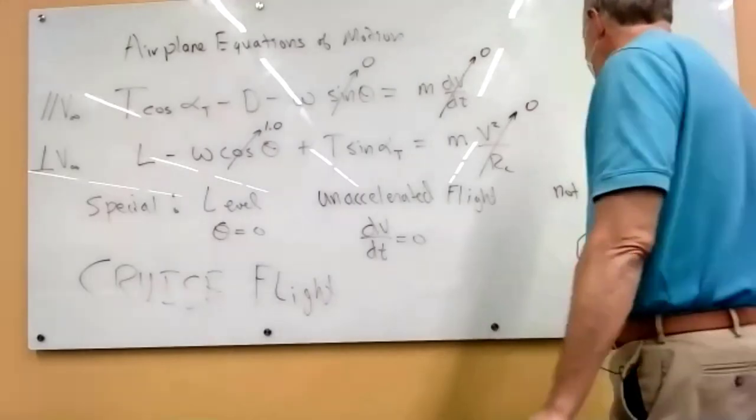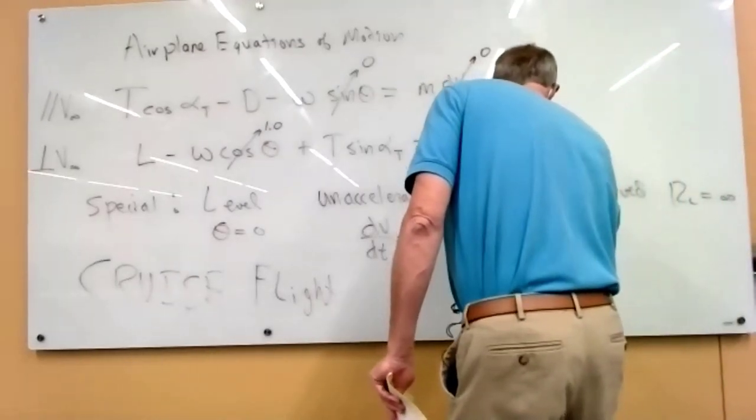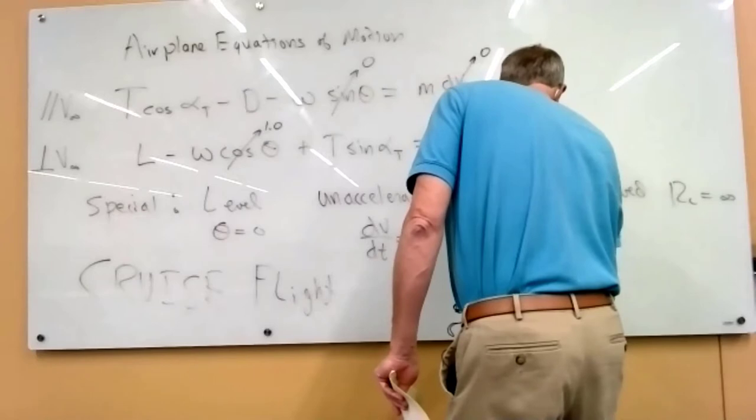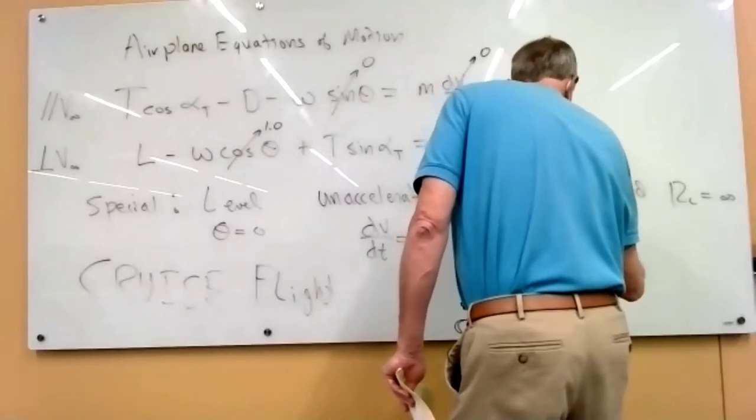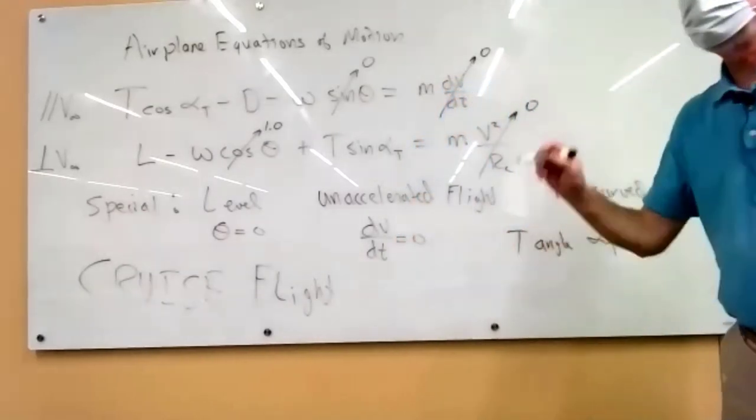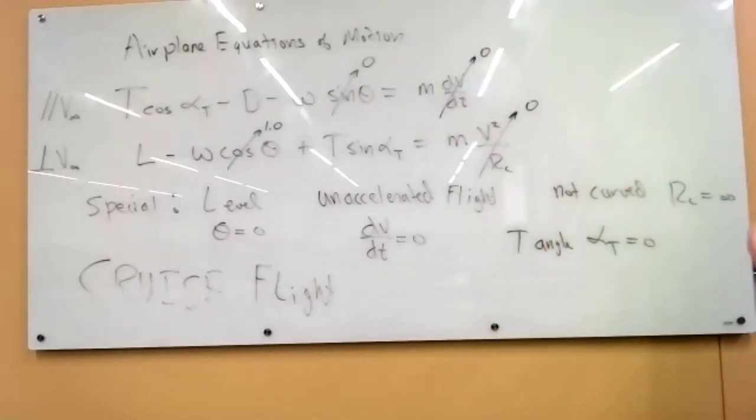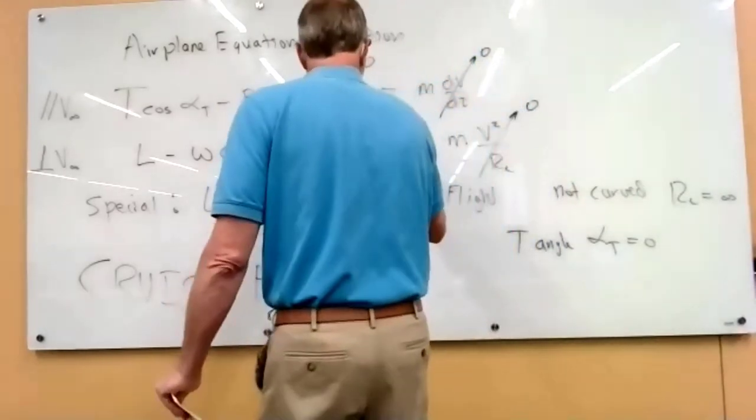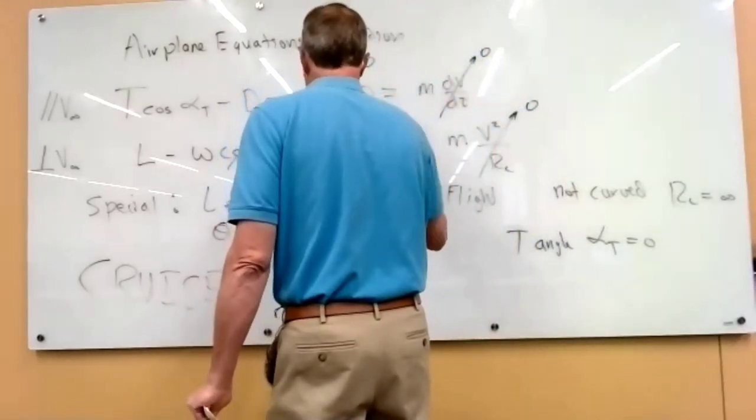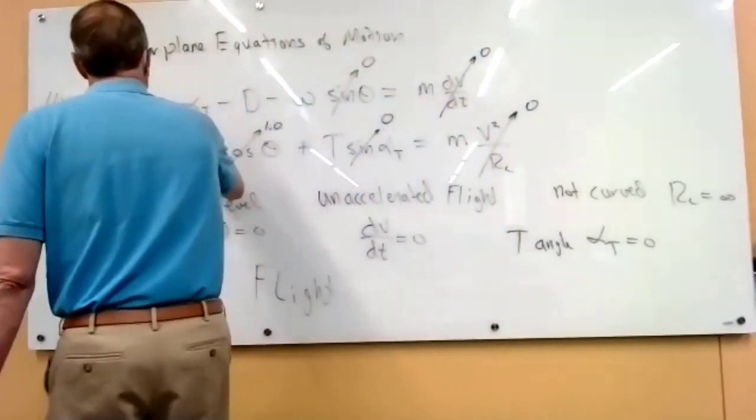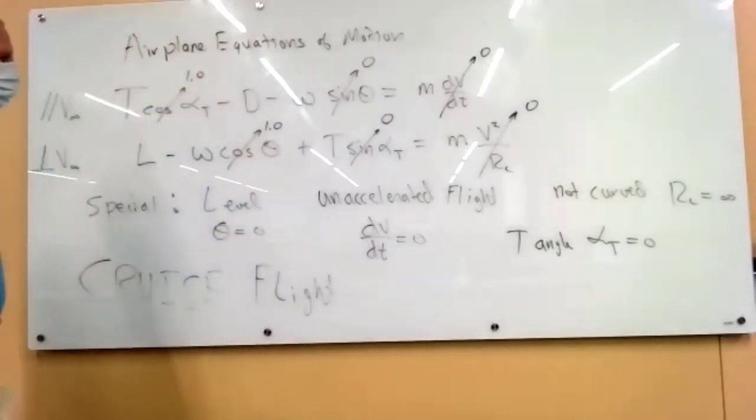And we're going to make one more assumption. We're going to say that the thrust angle is zero, which means that the engines are lined up perfectly in line with the airplane for cruise flight condition, which makes sense, because that would be the most efficient way to put the engines on the airplane.